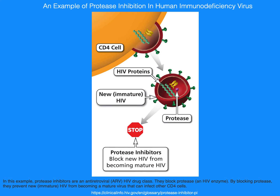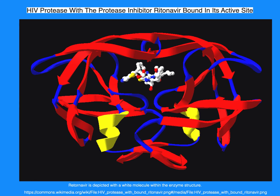An example of protease inhibition in human immunodeficiency virus: protease inhibitors are an antiretroviral HIV drug class. They block protease, an HIV enzyme. By blocking protease, they prevent new and immature HIV from becoming a mature virus that can infect other CD4 cells. HIV protease, with the protease inhibitor ritonavir, is bound in its active site. Ritonavir is depicted with a white molecule within the enzyme structure.